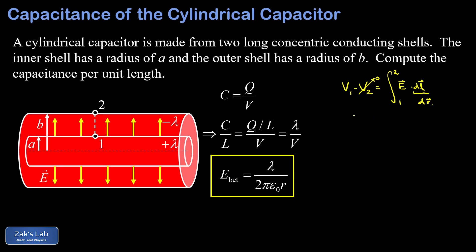Our potential difference is really just the potential on the inner shell, which we call V, and our integral is the integral of E times dr — because the dot product was trivial. Our starting value of r is a, the radius of the inner shell, and our finishing value of r is b, the radius of the outer shell. Now we can plug in our previous result for the electric field: the integral from a to b of lambda over 2 pi epsilon-zero r, dr.